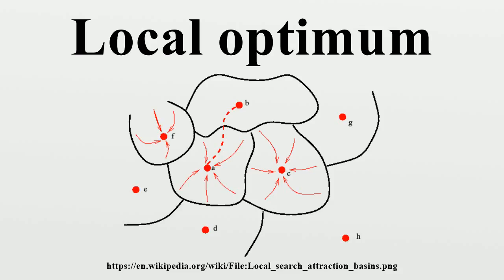This is in contrast to a global optimum, which is the optimal solution among all possible solutions, not just those in a particular neighborhood of values.